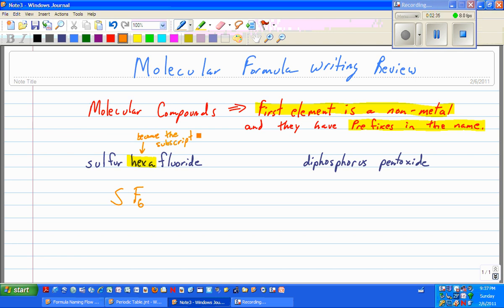Let's try another one, diphosphorus pentoxide. Not even going to go to the periodic table for this one, because I can clearly see prefixes all over the place. I've got di here. I've got penta here.